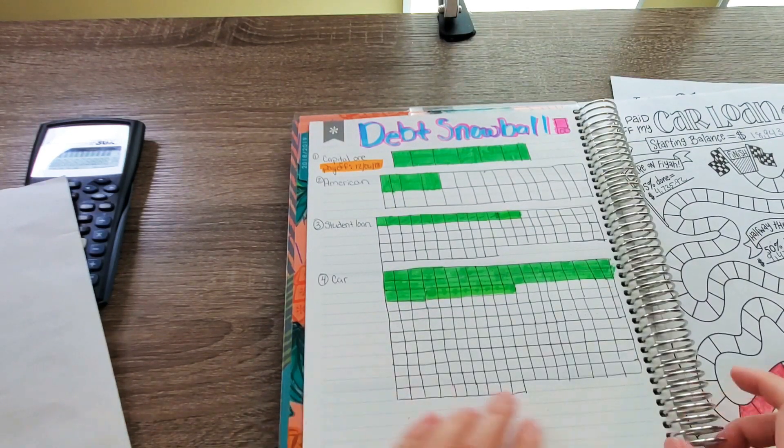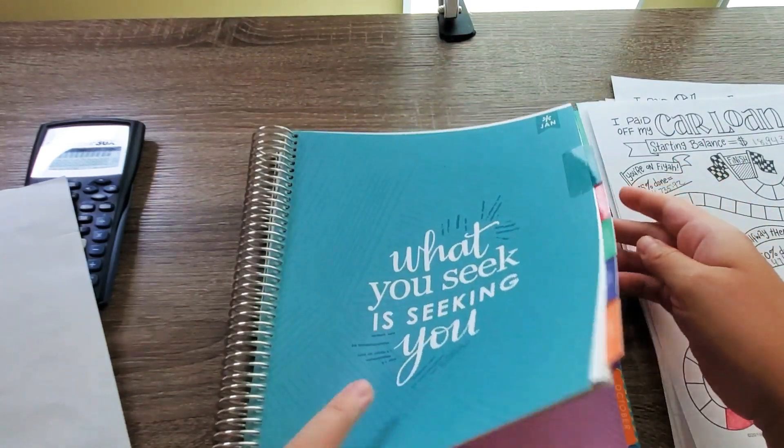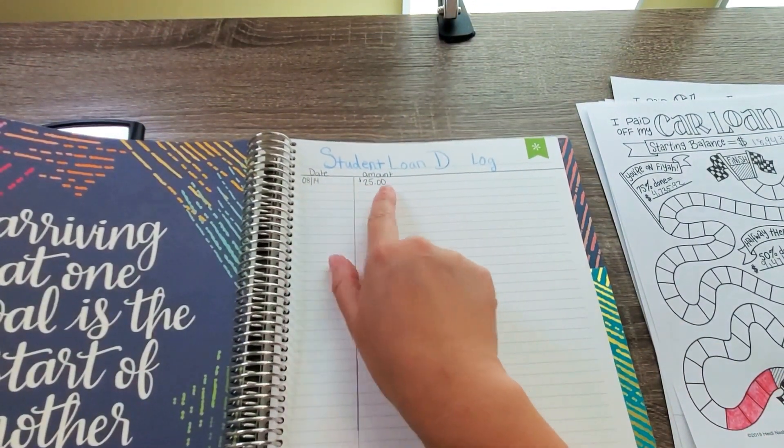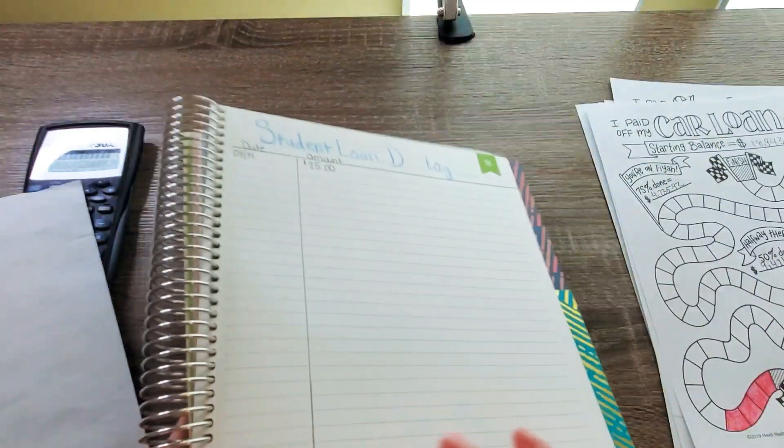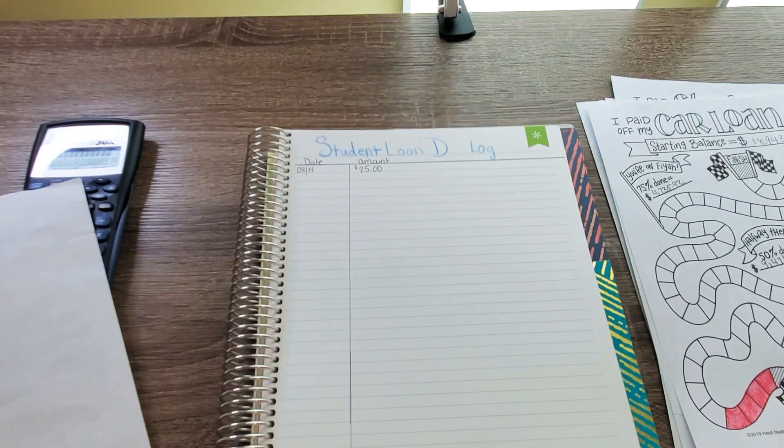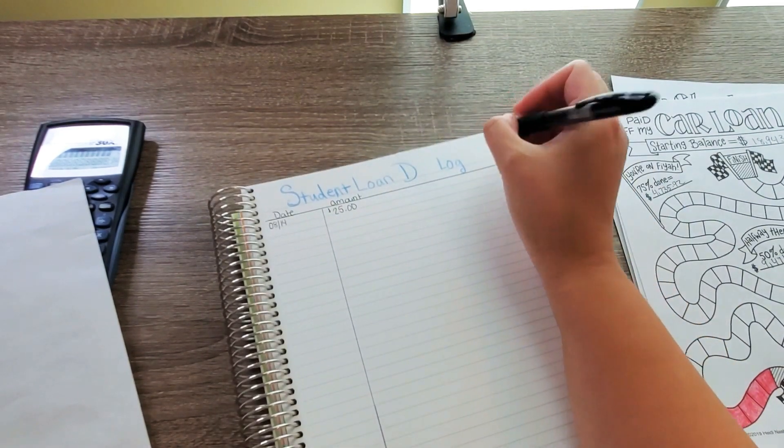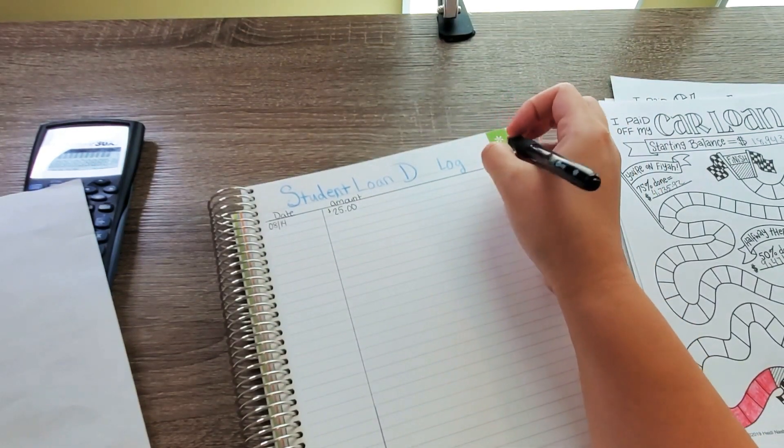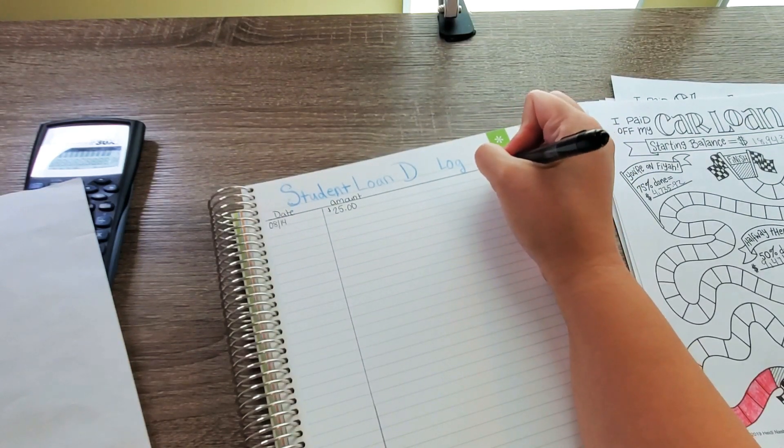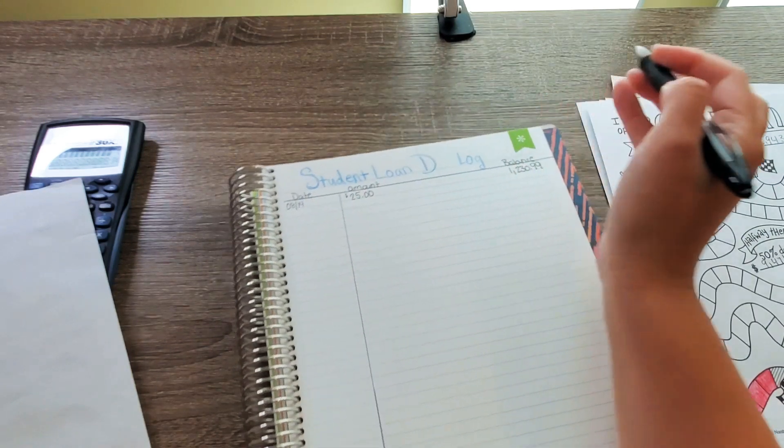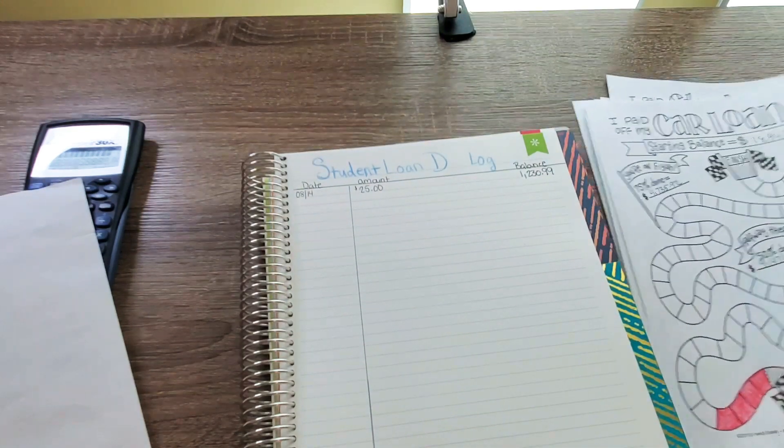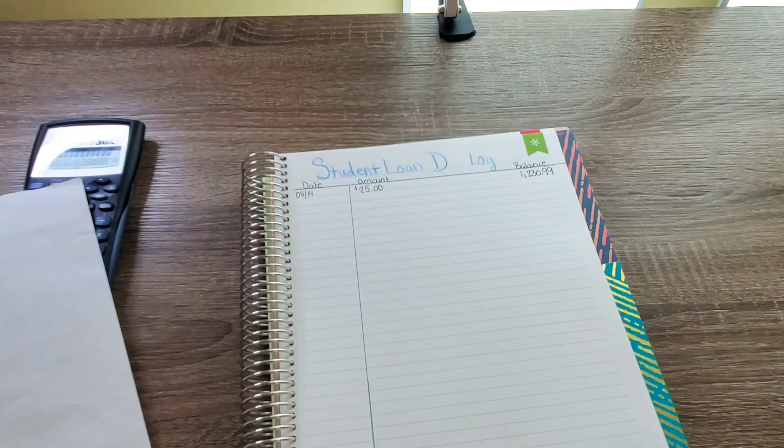But like I said, I did make a payment yesterday, which I'm going to flip all the way back to this. So my student loan D log on the 14th is $25. And then I'm just going to write the balance for loan D so we can keep up with the balance for it. So we're just going to write balance. The balance is $1,230.99. As of right now, when this goes in, then this will go down. But I'm not going to do it until it goes in and it takes about three days.